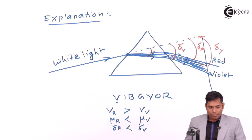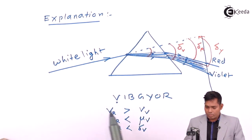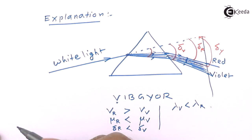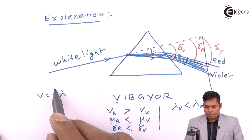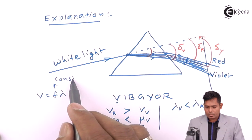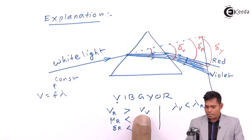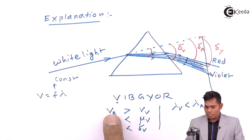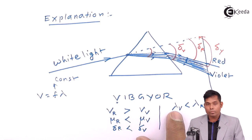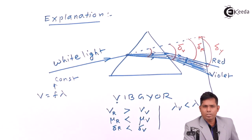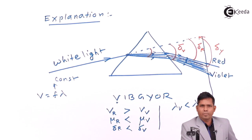As far as wavelength is concerned, frequency will remain the same. The wavelength of violet is less than the wavelength of red because velocity equals frequency times wavelength, and since frequency is constant, the wavelength of red will be more and the wavelength of violet will be less. So red light moves faster and violet light moves the slowest because of its high refractive index.